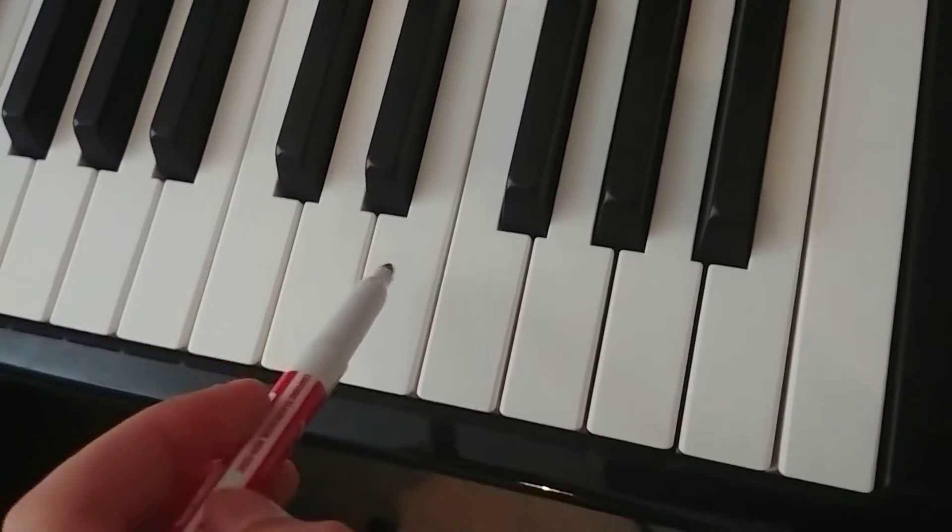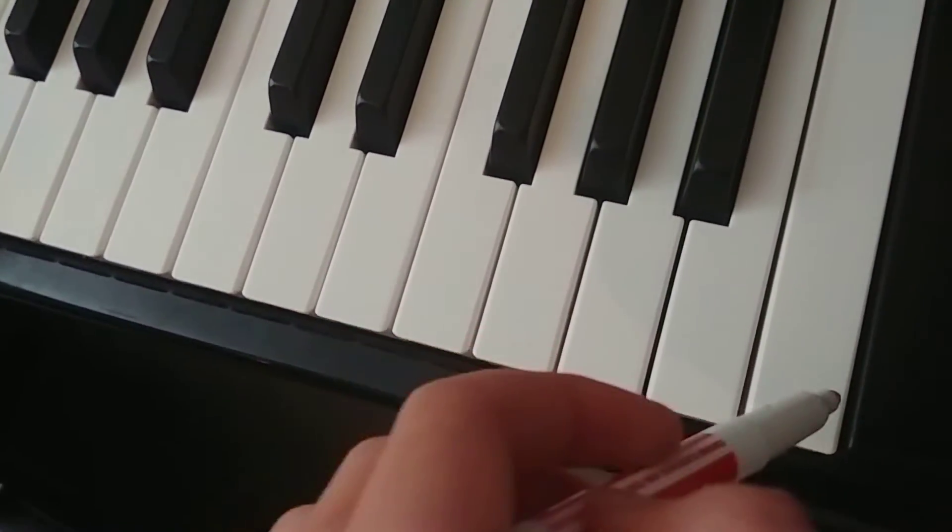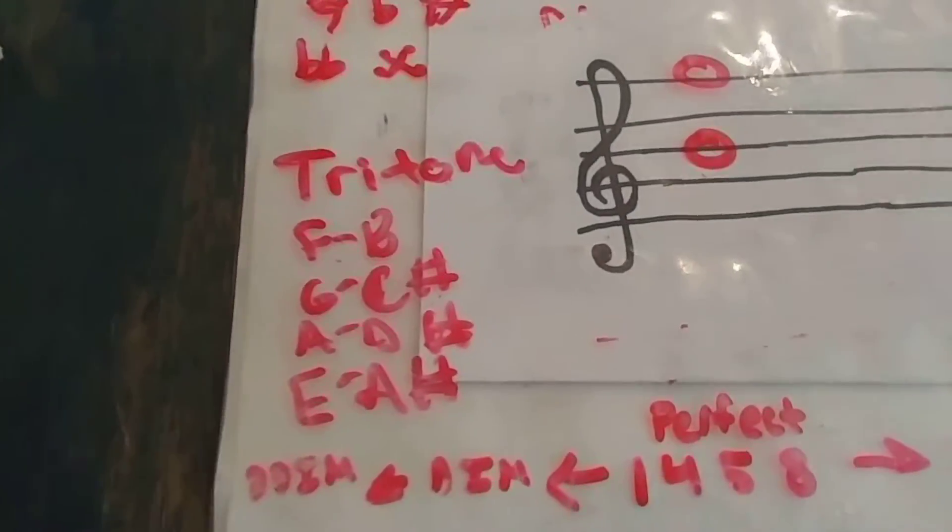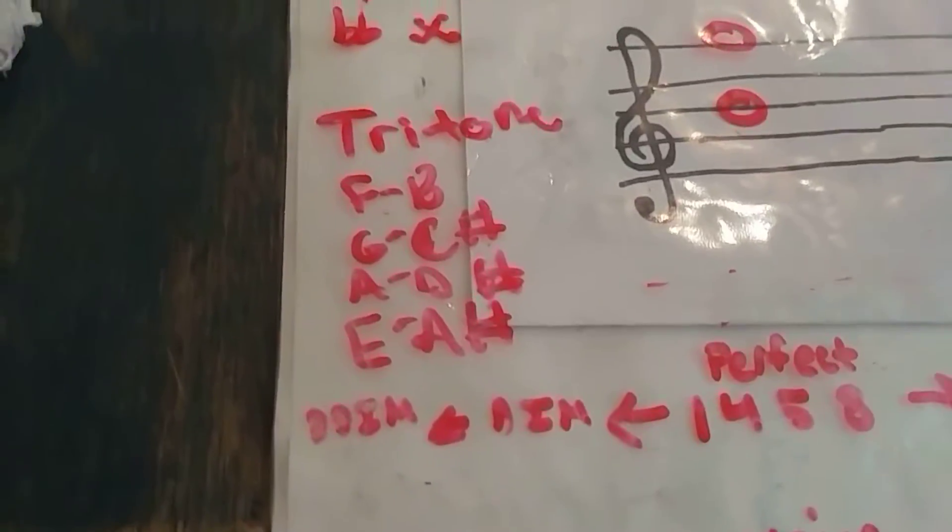And both of these notes have the exact same space between them. F and B and B and F, same space between them in terms of half steps, which is six. There are twelve different possible tones. I mean, if you look over here, there are twelve. One, two, three, four, five, six, seven, eight, nine, ten, eleven, twelve. It's the same. So, there you go. So, that's what's interesting about this. It's the exact same between them.